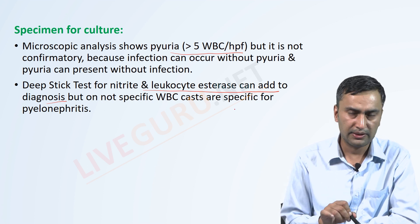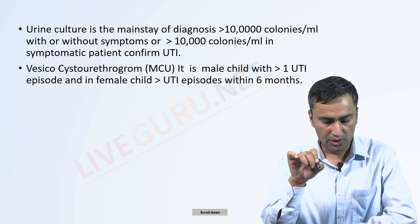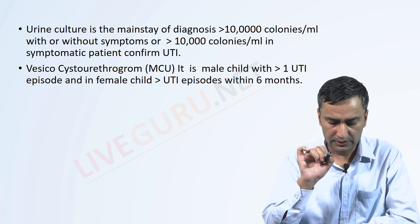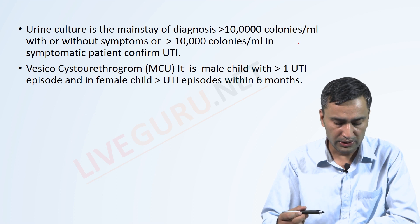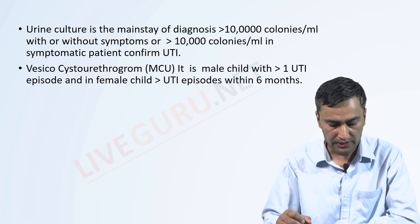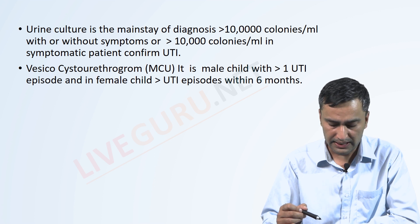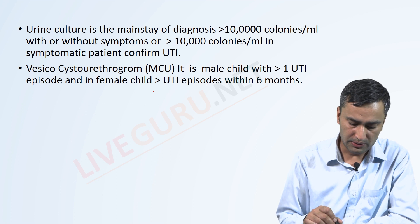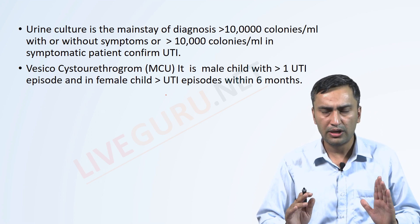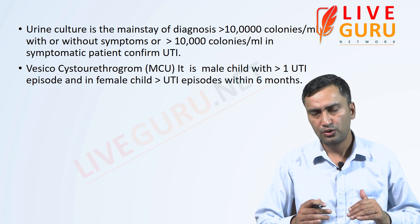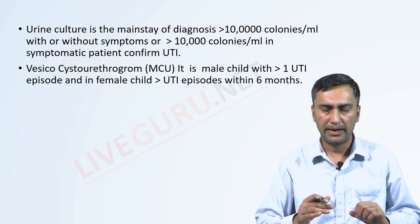WBC casts are specific for pyelonephritis. Urine culture showing more than 10^5 colonies per ml with or without symptoms, or more than 10,000 colonies per ml in a symptomatic patient, is diagnostic of UTI. Voiding cystourethrogram (VCUG) is indicated in a male child with more than one UTI episode and in a female child with a UTI episode within 6 months. There is another protocol for when to perform VCUG, which will be discussed later.